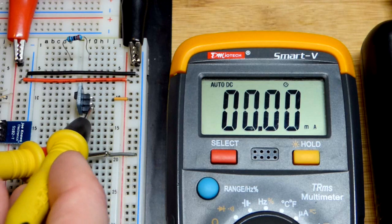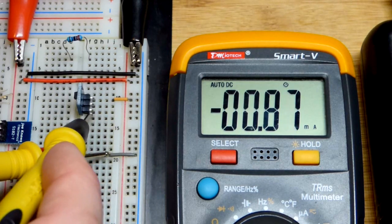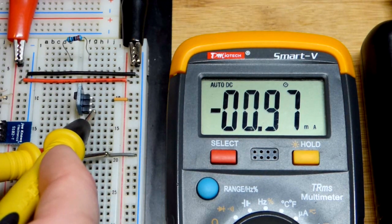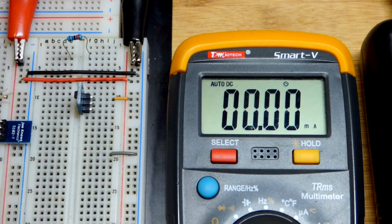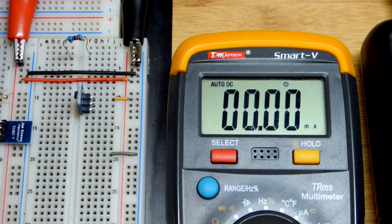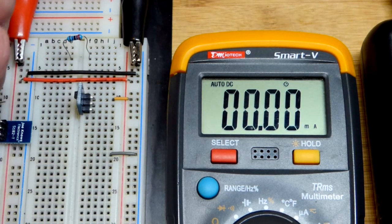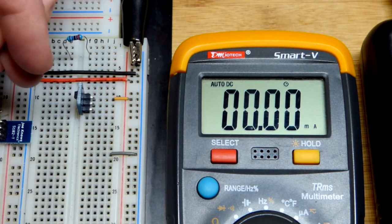If I put it backwards, you can see once I get a good connection, the same number just negative. Current goes in the opposite direction. We can change the load - we'll do one LED first.